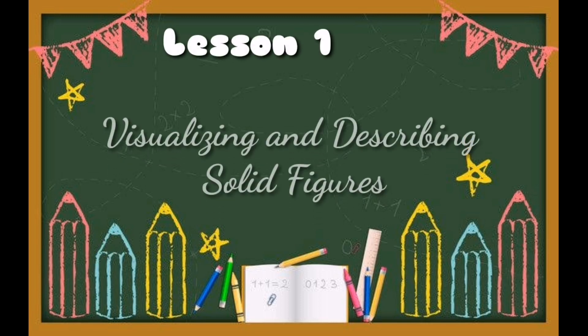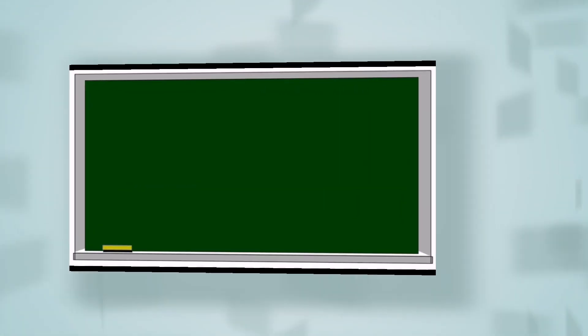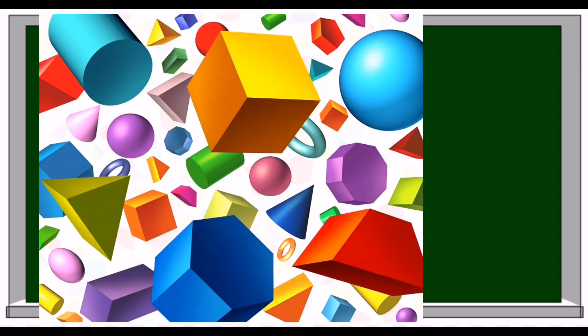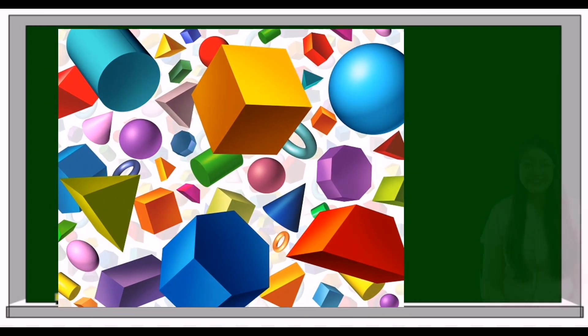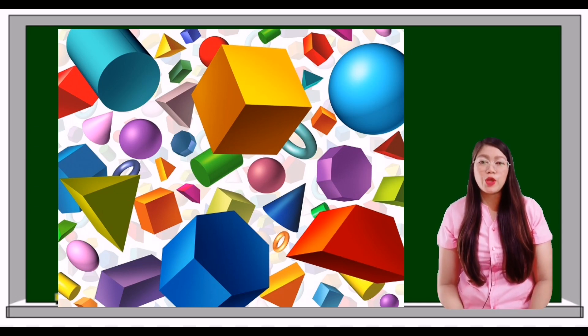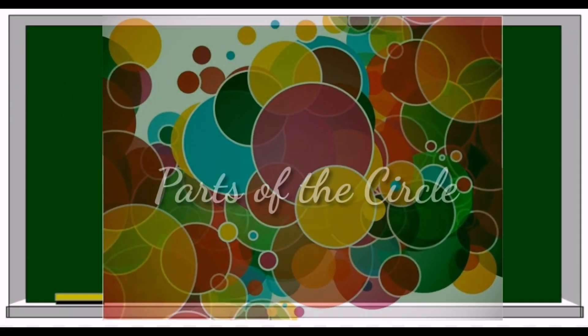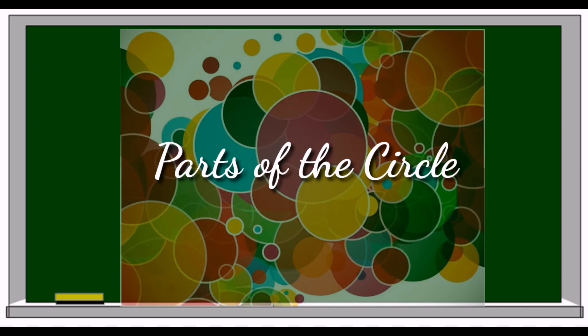Lesson 1 for Week 5. Our topic is about visualizing and describing solid figures. Solid figures are everywhere around us. In this lesson, we will learn what solid figures are and explore some common types. But first, let us have a review on your past lesson. This is also your drill in the form of a game called 'Label Me,' all about parts of the circle. Are you ready?